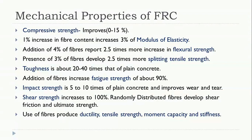The toughness of FRC will be improved 20 to 40 times more than normal concrete — toughness relates to impact load, meaning sudden loads. Addition of fibers increases fatigue strength by about 90 percent, and impact strength is 5 to 10 times more than normal concrete. It also improves abrasion resistance, and shear strength increases by up to 100 percent due to the randomly distributed fibers, providing good shear friction and ultimate strength.